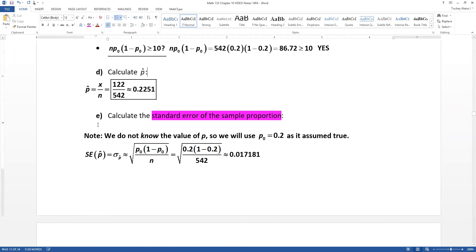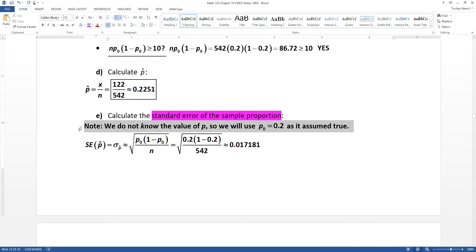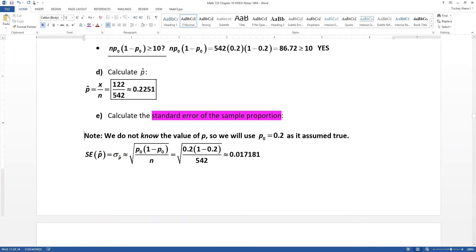So even though we don't know the value of P, we're going to use P₀. So it's the square root of P₀ times (1 - P₀) all over N.